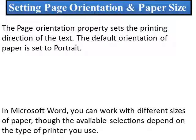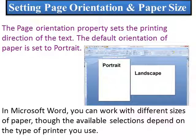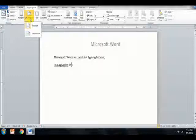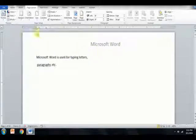Setting page orientation and paper size. The page orientation property sets the printing direction of text. The default orientation is set to portrait, in which the document is printed lengthwise. When we choose landscape orientation, the document is printed widthwise. To change the paper orientation, select the Page Layout tab, click on the Orientation button. By default it is portrait — choose landscape orientation from the drop-down list and observe the changes.